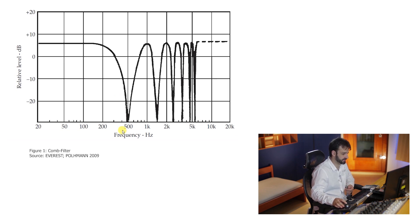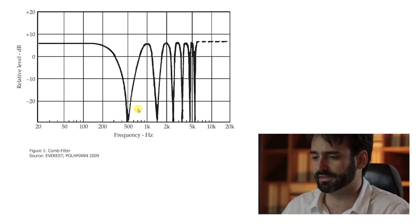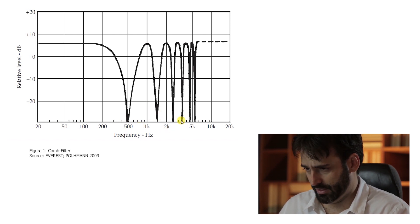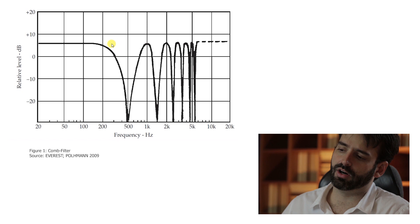Here we have cancellations at 500 Hz, 1.5 kHz, and another cancellation — it looks like a comb, that's why it's called a comb filter. This is very important in small rooms like studio control rooms, recording rooms, critical listening rooms, and home theaters.